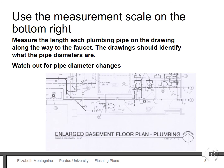Once you physically measure the length of each pipe segment using a ruler, you can then use the scale to convert those measurements to real-world numbers. The drawing should identify what the pipe diameters are. Pay attention to changes in pipe diameter — I'll show you why that is important next.